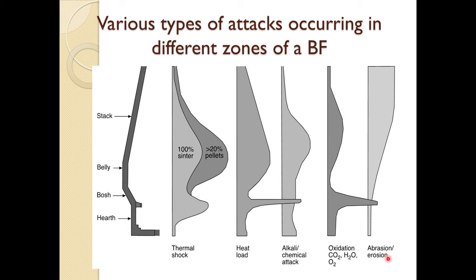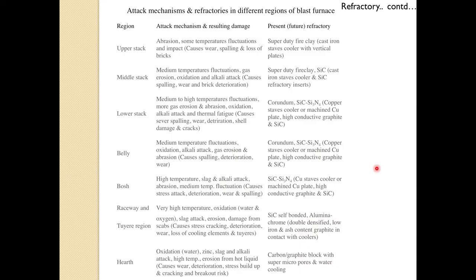Abrasion and erosion: abrasion is very high in the upper region where raw material falls — very high abrasion and erosion at the top, decreasing as material descends and undergoes reduction. In the fusion and melting zone in the lower part, there is not much erosion. This gives an overview of the various attack mechanisms and their effects on refractories.